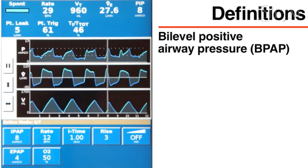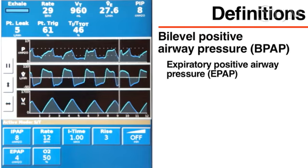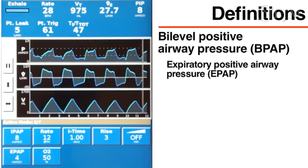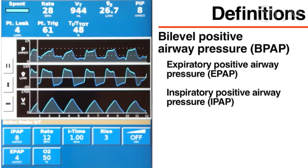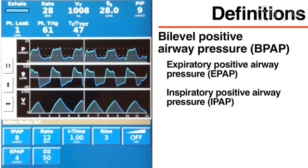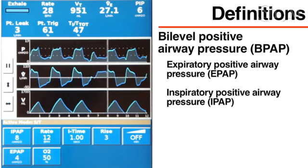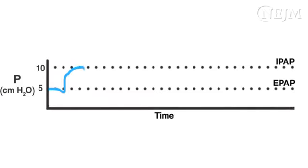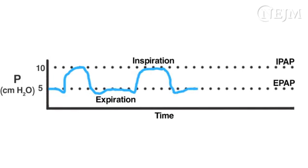In BPAP, the ventilator cycles between two pressures, delivering an expiratory positive airway pressure, or EPAP, during expiration, and a higher inspiratory positive airway pressure, or IPAP, during inspiration. The difference between EPAP and IPAP provides pressure support to the patient, thereby increasing tidal volume and directly supporting ventilation. This graph shows airway pressures in a patient receiving BPAP. The tidal volume correlates with the difference between the expiratory and inspiratory pressures.